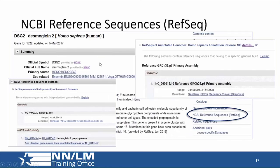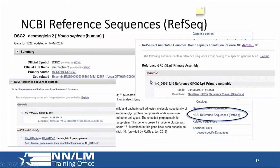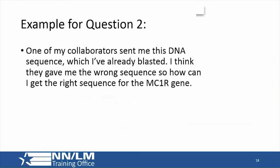In the gene record, the NCBI reference sequences section is near the bottom of the table of contents. The example for question two: a person is collaborating with a research group, they've been sent a sequence, already BLASTed it, identified matches, and think they've gotten the wrong sequence. So they want to get the correct sequence for the MC1R gene.